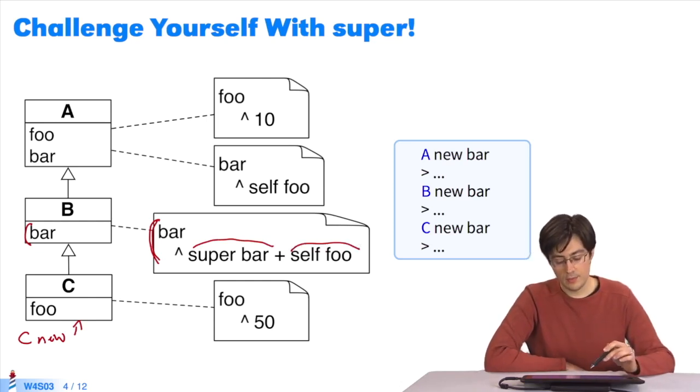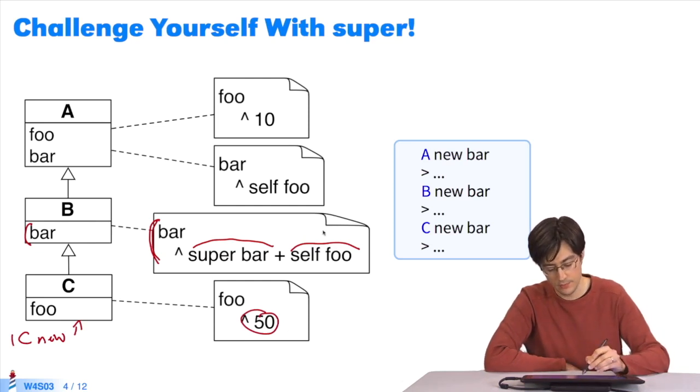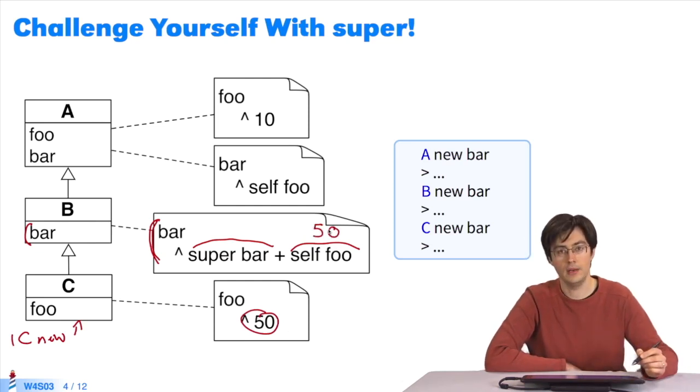We can start with the second. We send the message foo to the object self. Self is still my C new here. I send the message foo. The method is found, and 50 is returned. I put the value 50 there. Now we need the first part of the sum, super bar.